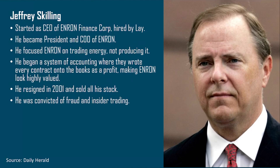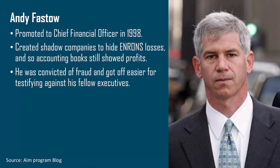Do bear in mind that both Lay and Skilling are actual real-life characters and the play stays very much true to their role in the company. Andy Fastow is another important character, promoted to chief financial officer in 1998. He created shadow companies to hide Enron's losses so that the accounting books still showed huge profits even when the company was making massive losses. He was convicted of fraud, however he received a lighter sentence for testifying and revealing the workings of his fellow executives.